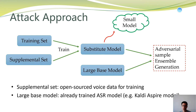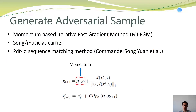When generating our AEs, we use the Momentum-based Iterative Fast Gradient Method, called MIFGM. Specifically, we use a song of music as our original carrier, and we use the CTC-based sequence matching method, which was used in the Commander Song method. Different from Commander Song, here we use the momentum-based idea to improve transferability, which was not used in that paper.